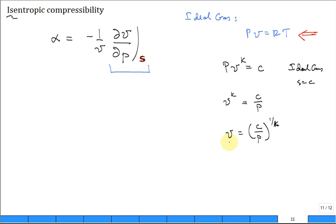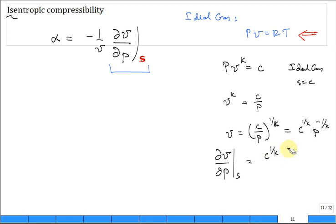So now that I have that, can I calculate the rate of change of V with respect to pressure? And I know that S is constant. So I'm going to have the C to the one over K as a constant. Forget about that. And I'll have P to the minus one over K. P to the minus one over K minus one.